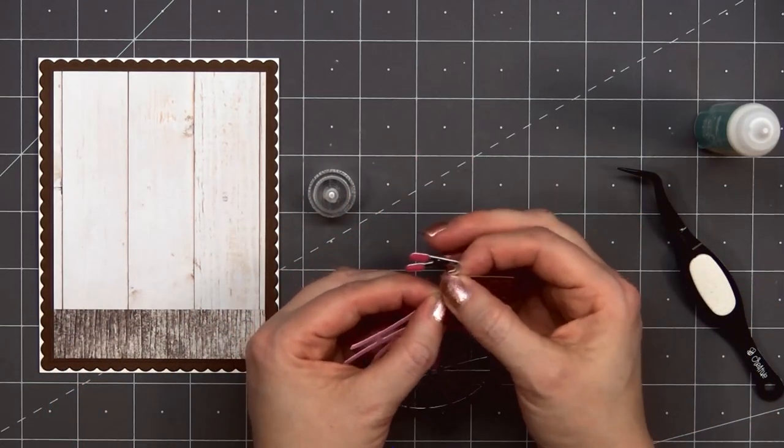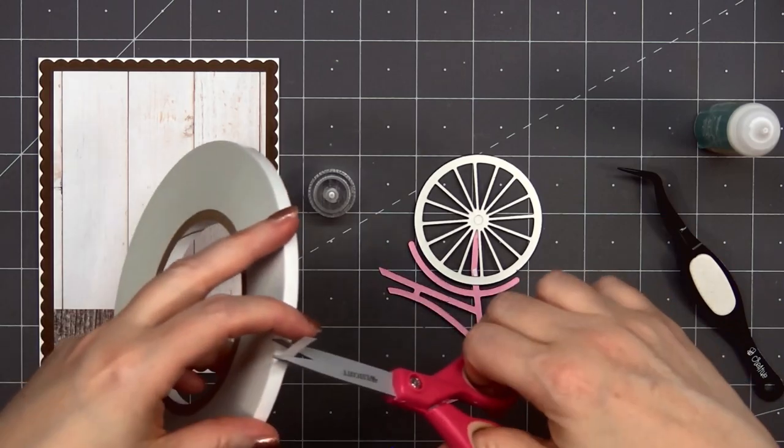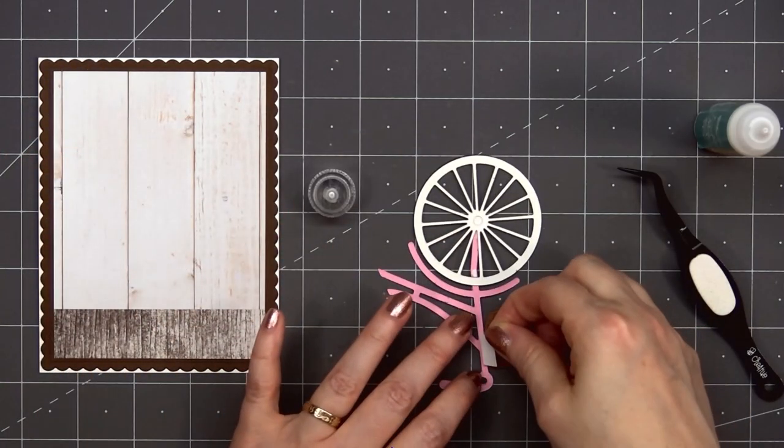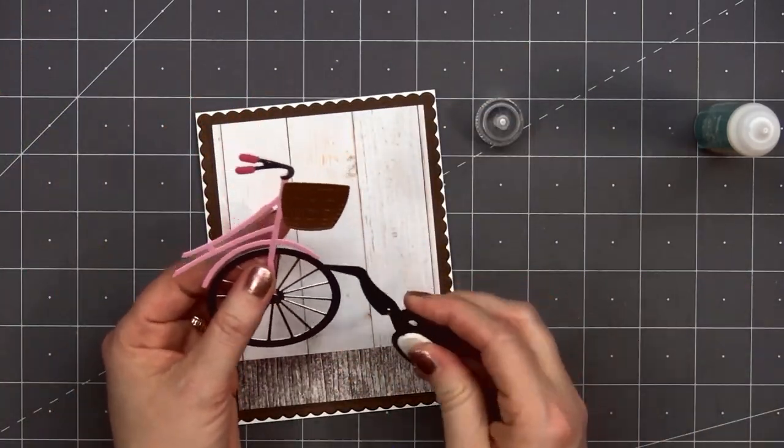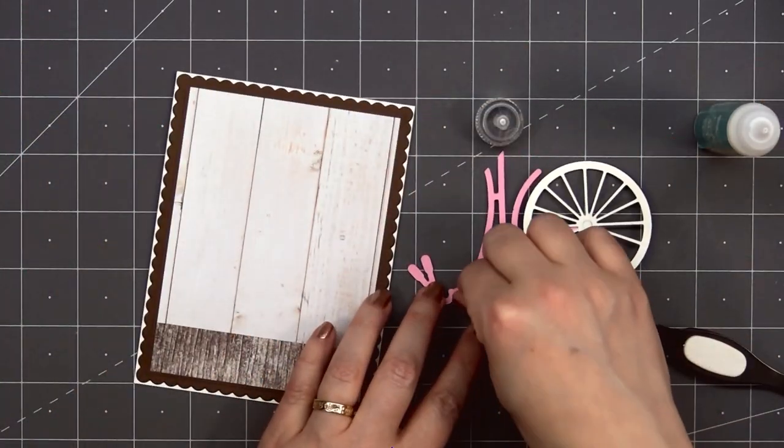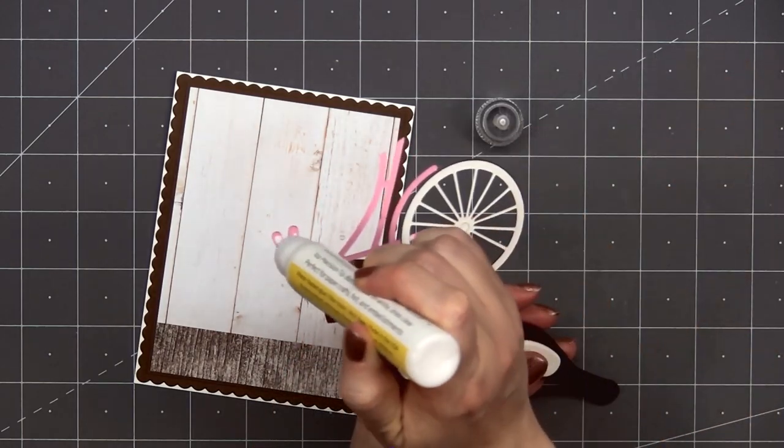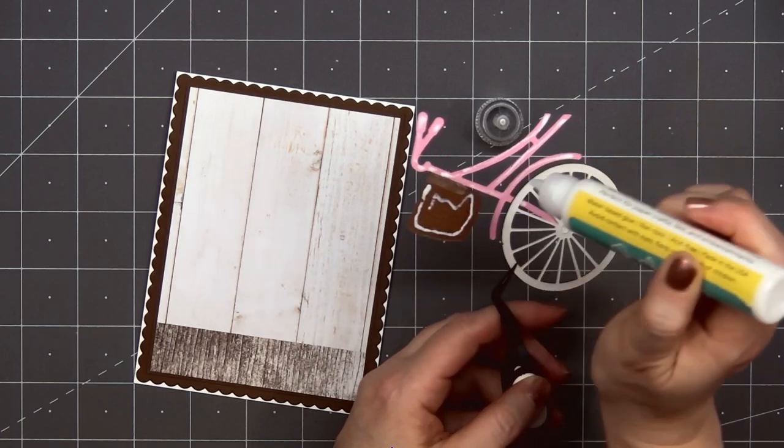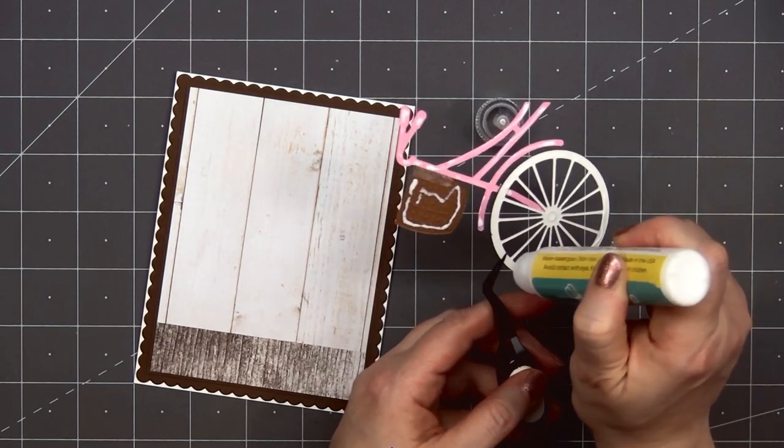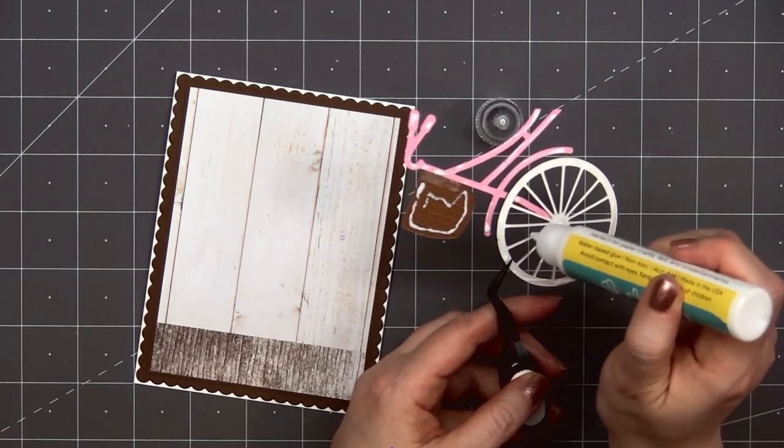I love that the die set includes a cute little basket and it does have a nice etched detail. You can fill your basket with all kinds of fun little goodies. To attach the basket to the bike I put just a small bit of liquid adhesive on the left side and to help it stay in place until I adhere the bike onto the card I put a small piece of double-sided tape.